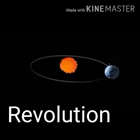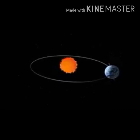Now let us discuss the effects of the revolution of the Earth. What is revolution? Revolution refers to the movement of the Earth around the Sun on its elliptical orbit.